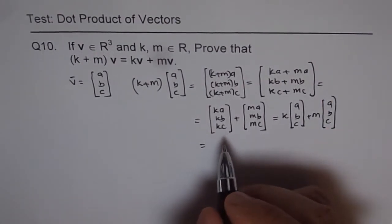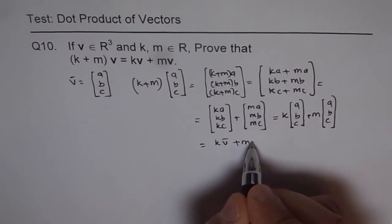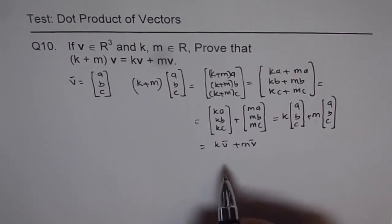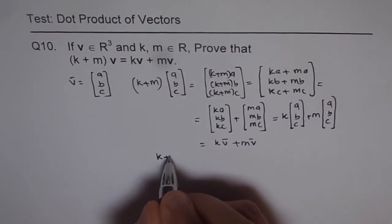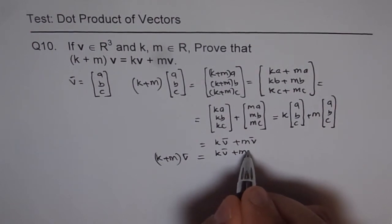And that gives us the answer which we are looking for. And this is the vector v. So it is k times vector v plus m times vector v. So that is how we can prove that (k + m)v = kv + mv.